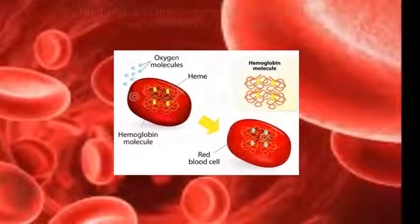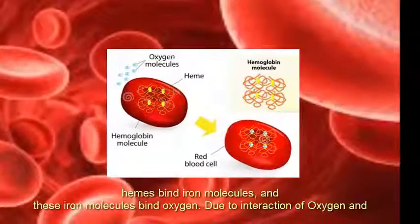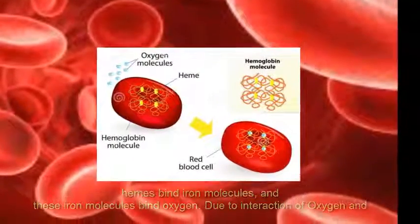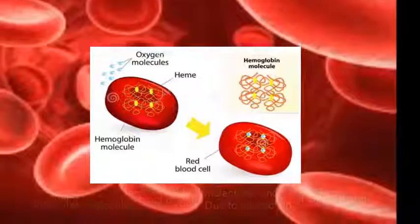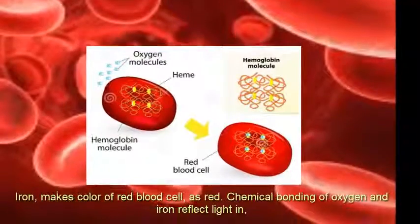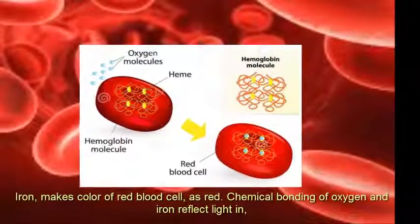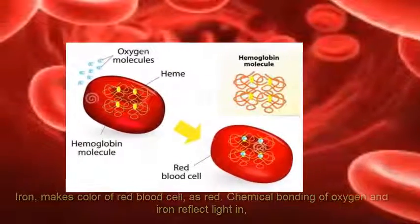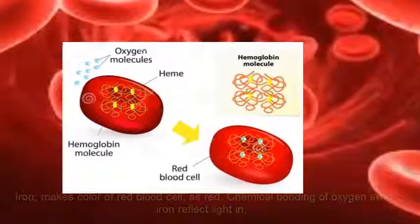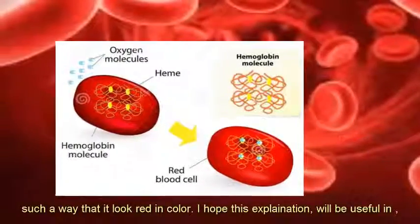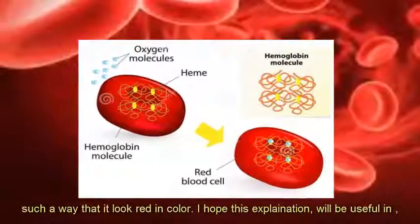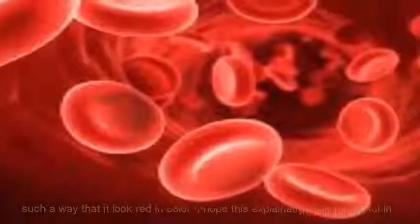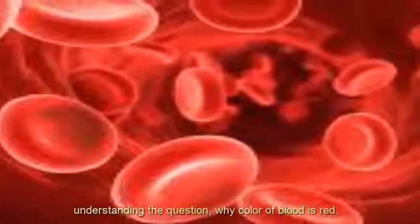Now let me explain in more detail. Hemes bind iron molecules, and these iron molecules bind oxygen. Due to the interaction of oxygen and iron, the color of red blood cells becomes red. The chemical bonding of oxygen and iron reflects light in such a way that it looks red in color.